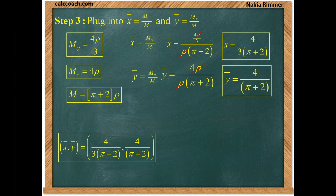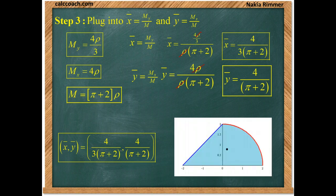We can look at a picture of this on a graph. Using a calculator, the x-coordinate is about one-quarter and the y-coordinate is about three-quarters. That point is your center of mass when the density is constant throughout the plate.